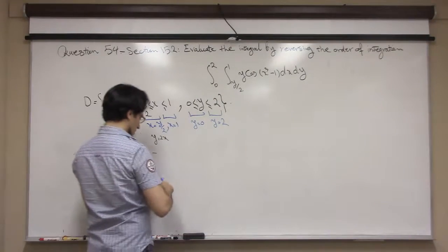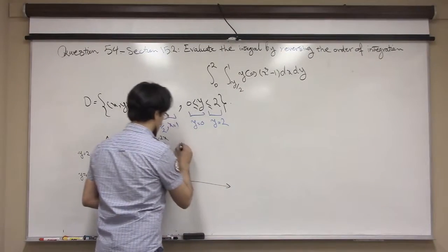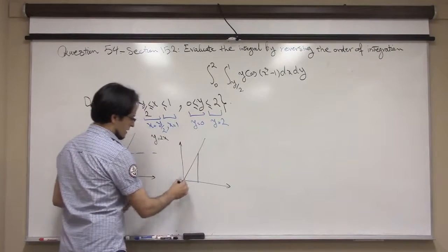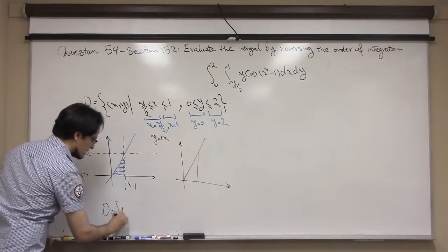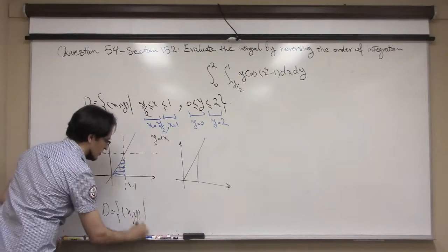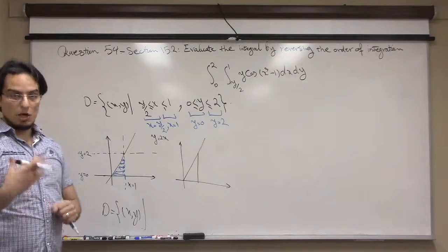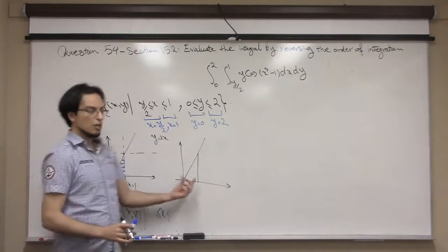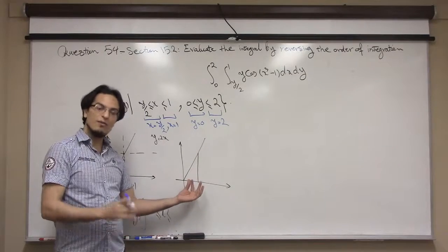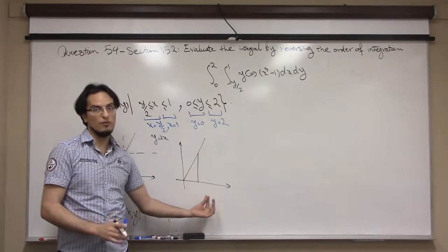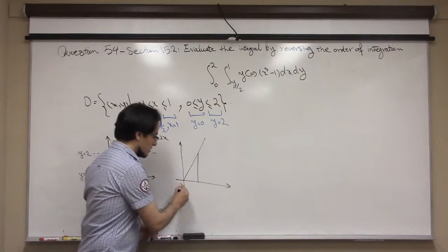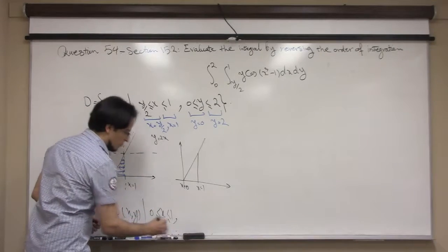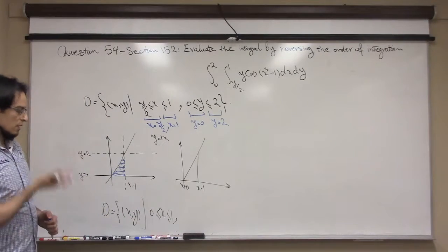I have to change this type 2 region to a type 1 region. For type 1, x has constant boundaries: the smallest value of x on the region is 0 and the highest value is 1, so x goes from 0 to 1.